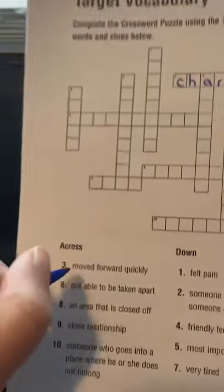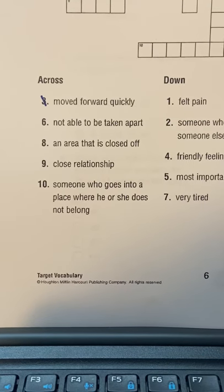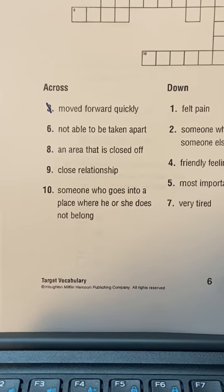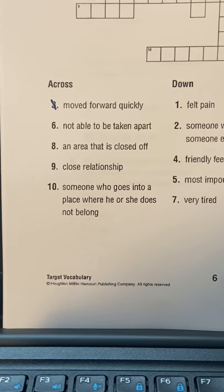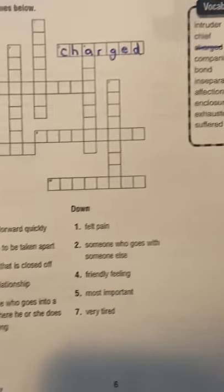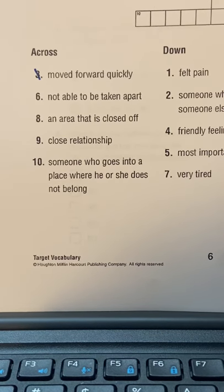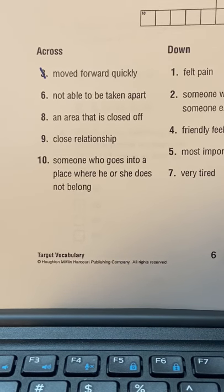I would mark it out so I know I used it, and then put a little dash there so I know I answered number three. Number six says 'not able to be taken apart' — choose a word from the vocabulary box. Number eight: 'an area that is closed off.'